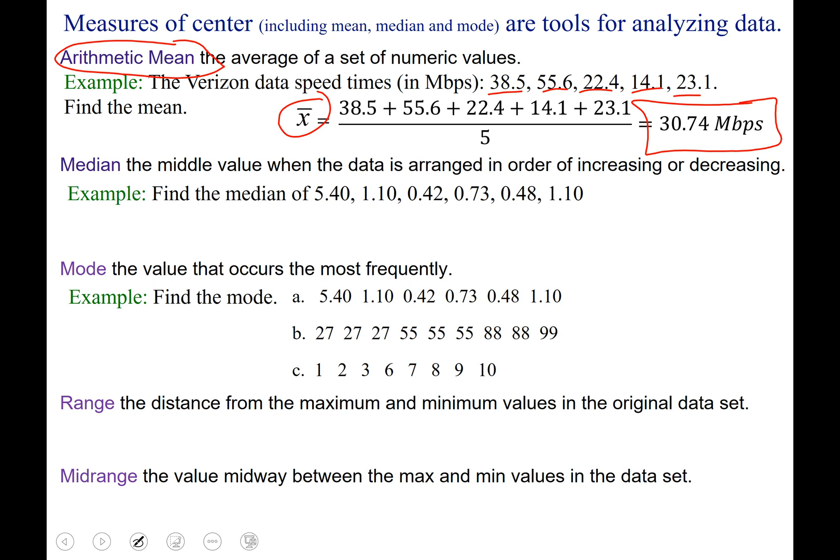Next, we have the median. To find the middle value when the data is arranged in order of increasing or decreasing. So in this example, we have six data values, and we're asked to find the median. So we rearrange them in order, here we have increasing, and we will look for the one in the middle.